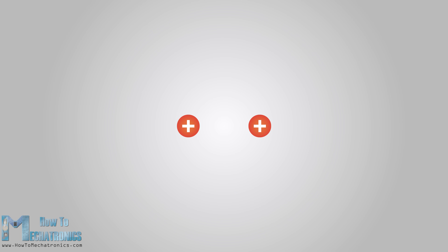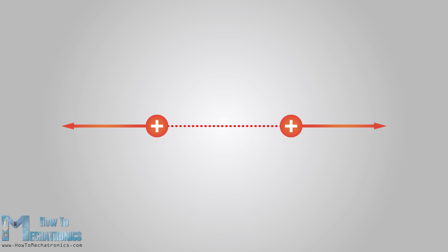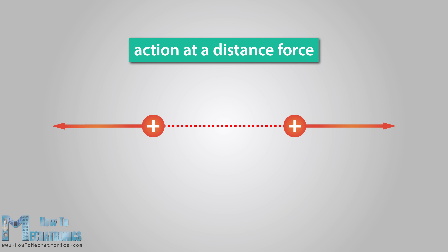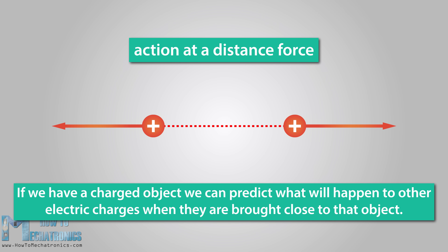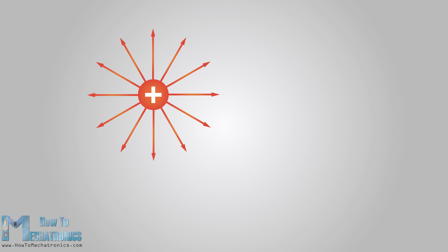Two electrically charged objects exert a force on each other, even when they are not in contact. This force is called an action at a distance force. If we have a charged object, we can actually predict what will happen to other electric charges when they are brought close to it. A charged object modifies the space around it, forming an electric field. The electric field has an ability to act with a force on another electric charge placed at any point of the field.